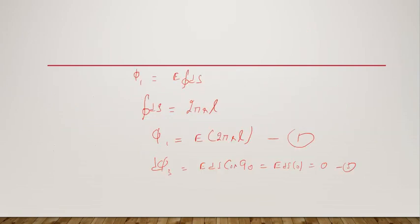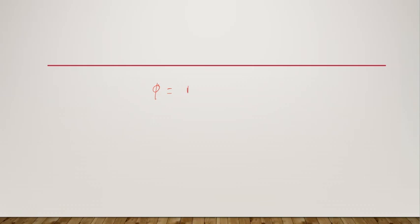The total flux is φ_total = φ₁ + φ₂ + φ₃ = E·2πrl + 0 + 0 = E·2πrl. This is equation number four. Our aim is to calculate the electric field intensity.